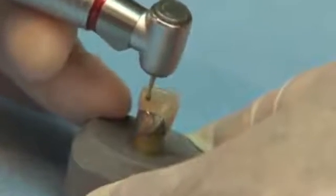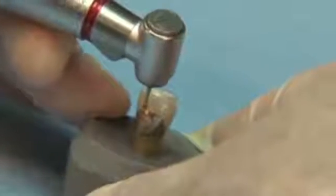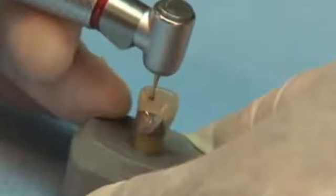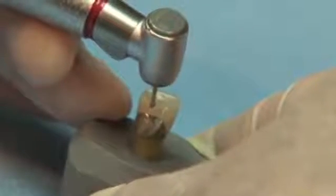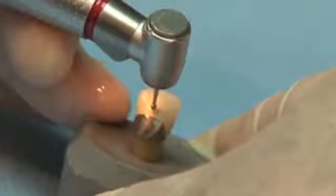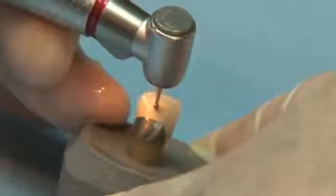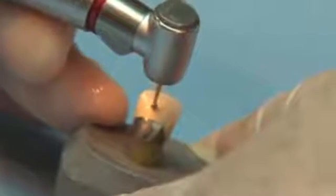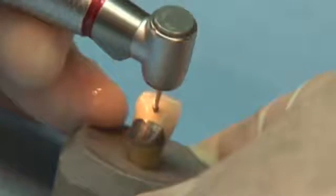Creating proper access for endodontic treatment requires the use of a burr that has the ability to cut through porcelain, composite, and metal. The Great White Series Carbide Burr is designed to cut through porcelain fused to metal crowns without shattering the porcelain or breaking the burr.